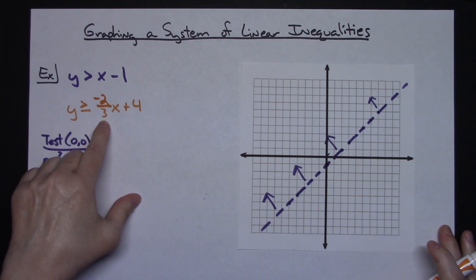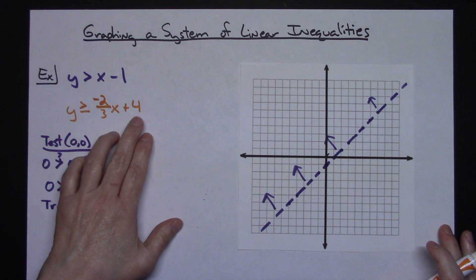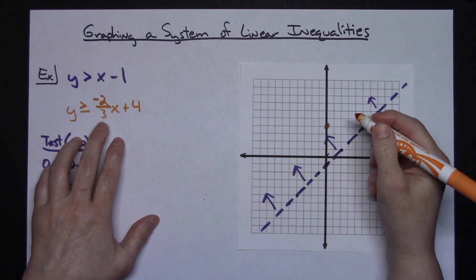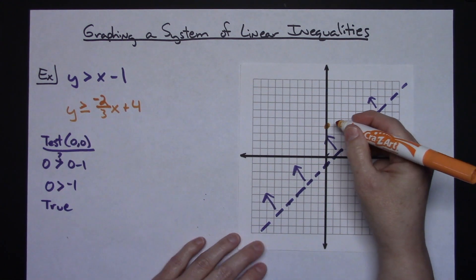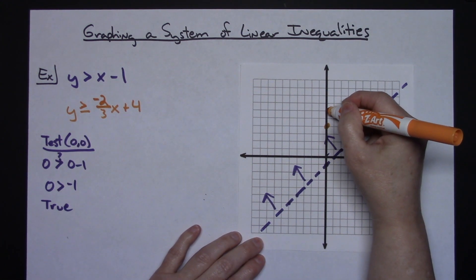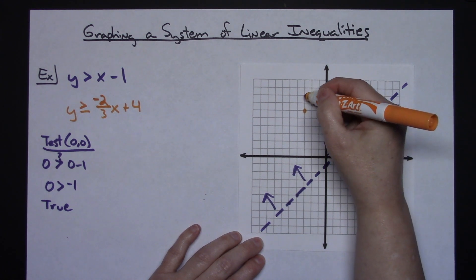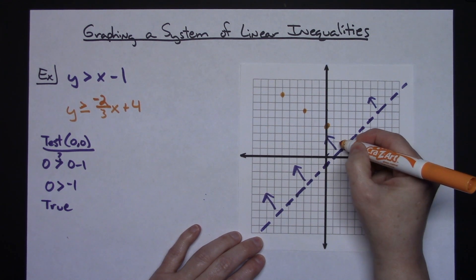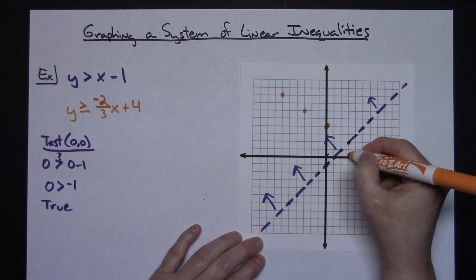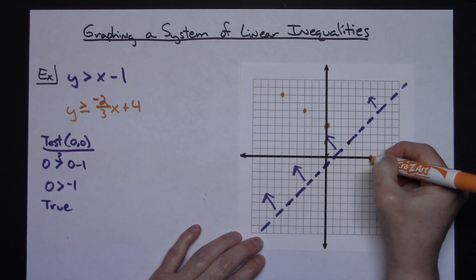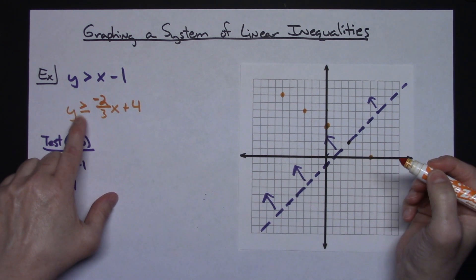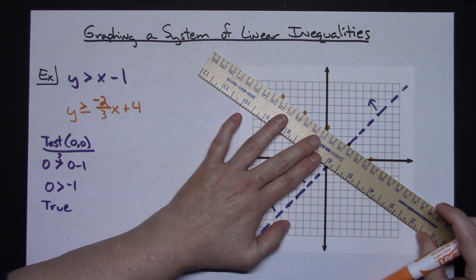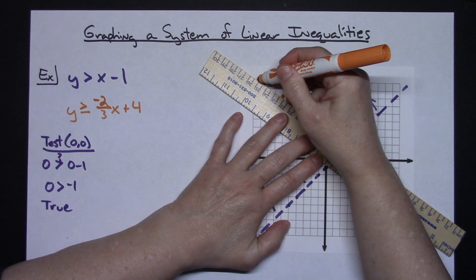Now let's graph the second line: y is greater than or equal to negative two-thirds x plus 4. In slope-intercept form the y-intercept is 4. I've got a negative slope of two-thirds, so I'll go up two and to the left three, and also down two to the right three to generate multiple points. The equal-to part in the symbol tells me this will be a solid line.